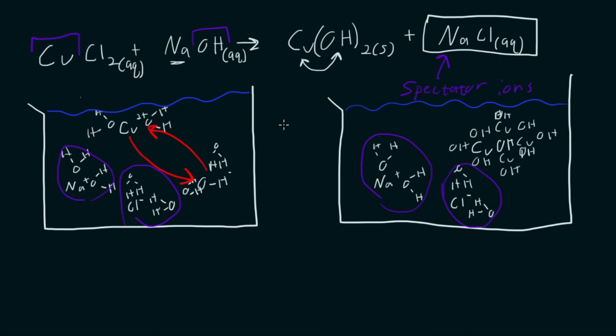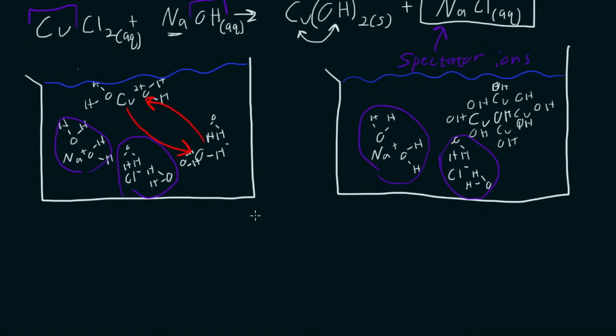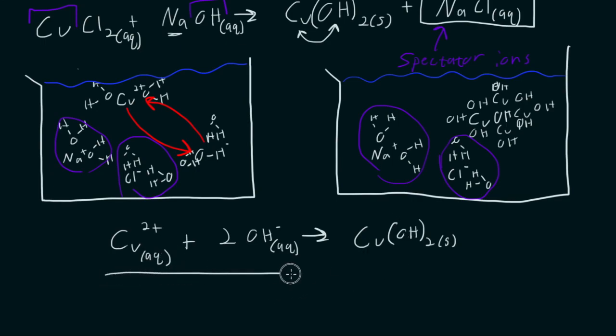And so we could rewrite this to draw attention only to the important part. We could rewrite this as Cu2+ plus 2OH- is making Cu(OH)2. And then put our states. And that would be a more efficient way to say that. We call this a net ionic equation.